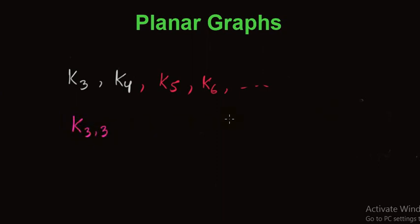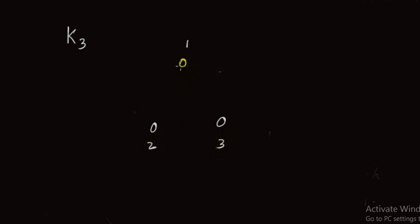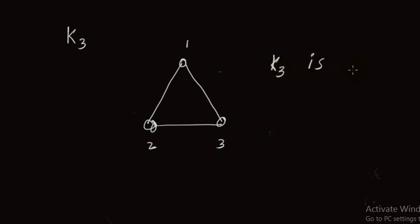At the end, we will prove that the complete bipartite graph K3,3 is also non-planar. We start with K3. K3 means complete graph of order 3. For K3 we choose 3 vertices: vertex 1, vertex 2, and vertex 3. We join 1 with 2, 2 with 3, and vertex 3 with vertex 1. We can join all the vertices without an edge crossing, so K3 is a planar graph. Remember, in a planar graph edge crossing is not allowed.